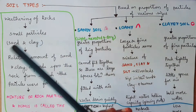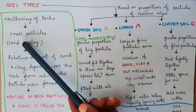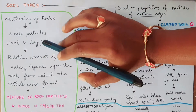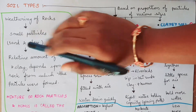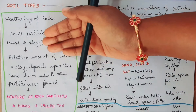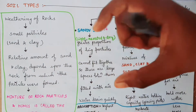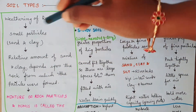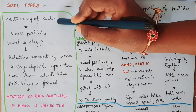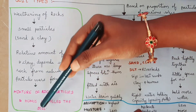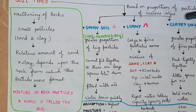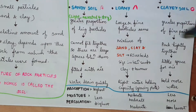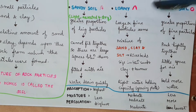Due to the weathering of rocks, small particles are formed — sand particles and clay particles. The amounts of sand and clay particles determine the type of soil. The mixture of rock particles and humus is called soil. We can divide soil into different types: one is sandy soil, loamy soil, and clay soil.